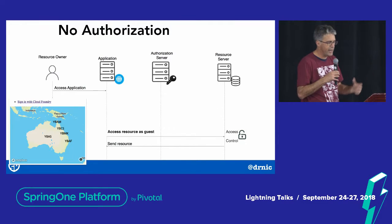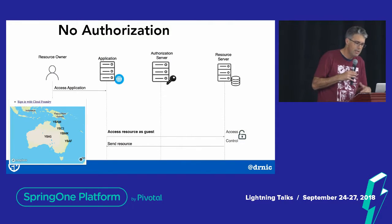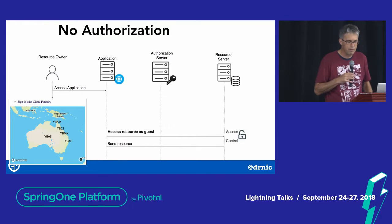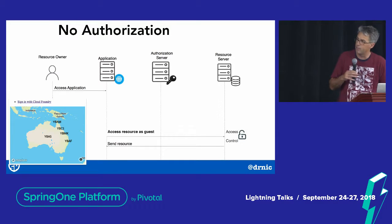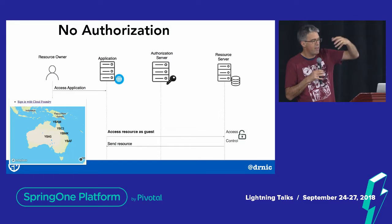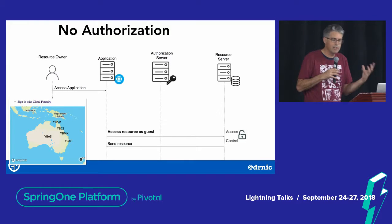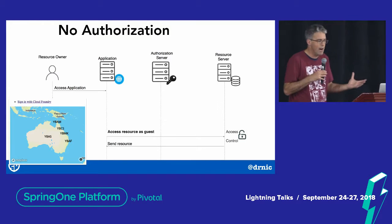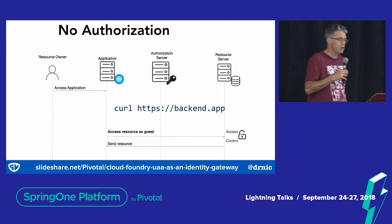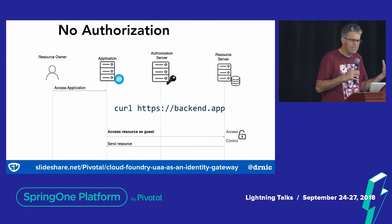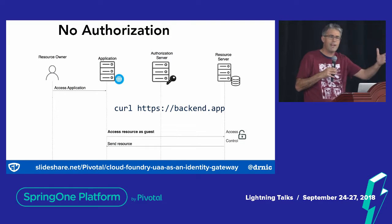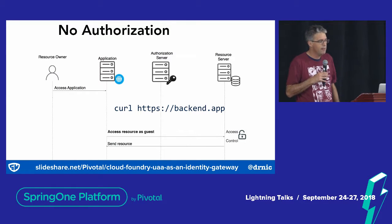If you've authorized through from the front-end app to the back-end app, you get more resources available. Let's look at a couple of pictures borrowed from some SSO slides. If you're not authorized, the back-end resource server is just going to say 'I don't know who you are — here's an error' or just a few results. The same would happen if you're doing a curl, like a front-end app to a back-end app.